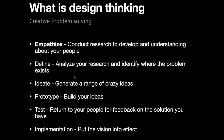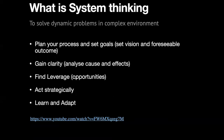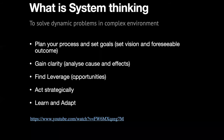System thinking is different from design thinking. While design thinking is applied to specific social problems, system thinking is for dynamic problems in complex environments — where solving one problem might create another. For example, hunger isn't just about food; it's tied to economic status, living conditions, job conditions, and many other factors. System thinking is about looking at the bigger picture rather than just focusing on a single problem.